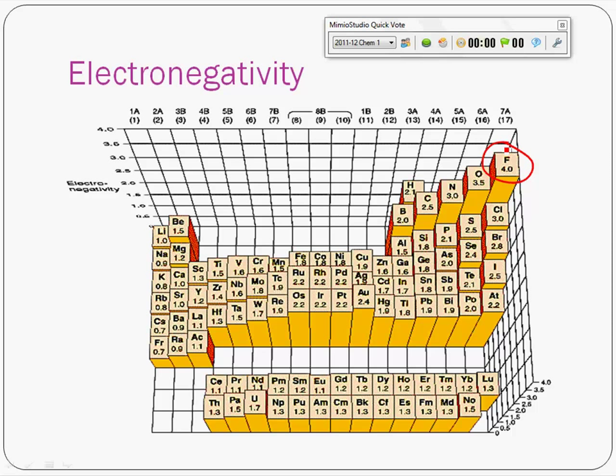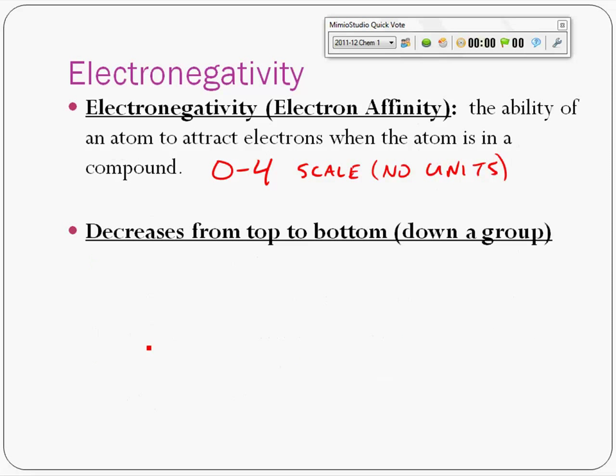Francium. Fluorine really wants electrons, while Francium just wants to give them away. Francium wants to give them away so much that it's the most reactive element.